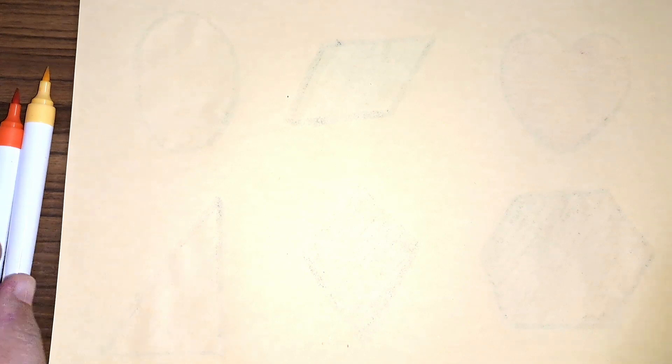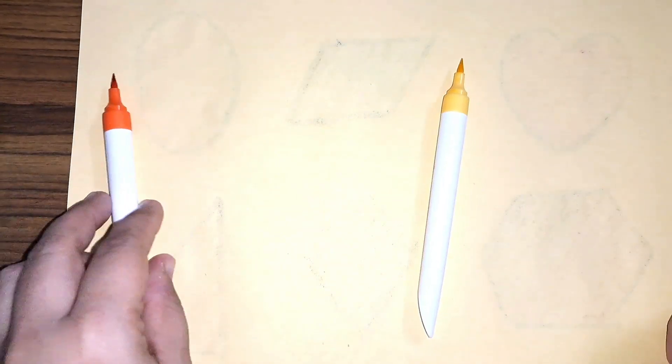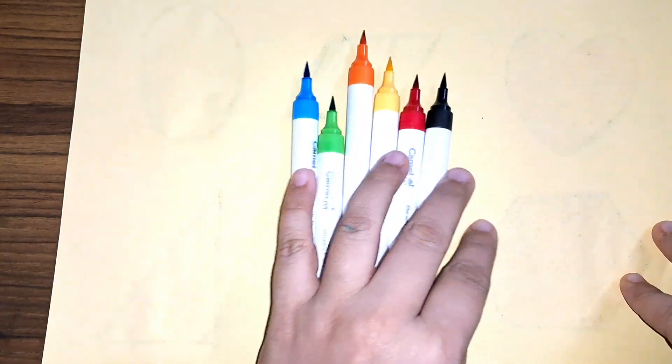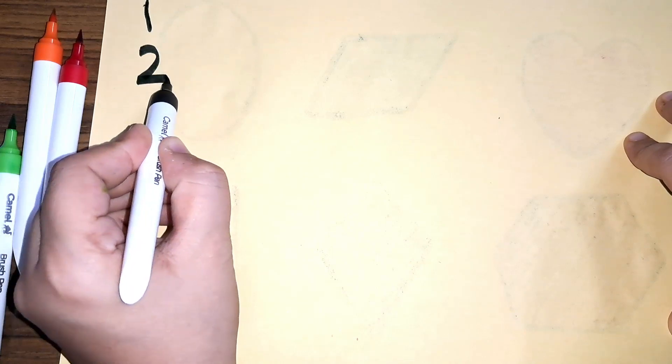Hey kids, how are you today? Let us learn some colors: yellow, orange, green, blue, red, black. These are the colors. Now let us learn some numbers. One, two.